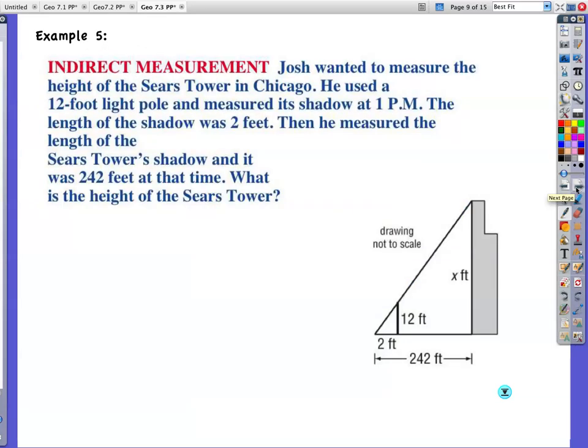Example five. Let me try to do a fancy Promethean board thing here. Josh wanted to measure the height of Sears Tower in Chicago. Here it is. He used a twelve foot light pole. Twelve foot light pole. And measured his shadow at one p.m. The shadow was two feet. Notice what they got there. Then he measured the length of the Sears Tower's shadow. I don't know how you do that in the big city, but he did. And it was two hundred and forty-two feet at that time. What is the height of the Sears Tower? Yeah, these are what I call flagpole props. Even though there's not flagpole in there. And they're very, very common.